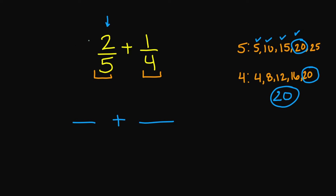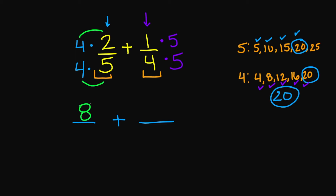So I'm going to multiply top and bottom by 4 — my numerator by 4 and my denominator by 4. Now let's look at 1 over 4. I need to get 20 in my denominator. If I multiply 4 times 5, that's going to give me a 20 in my denominator. So I'm going to multiply top and bottom by 5. So we have 4 times 2, this is going to give me 8. And then 4 times 5 — this is 20.